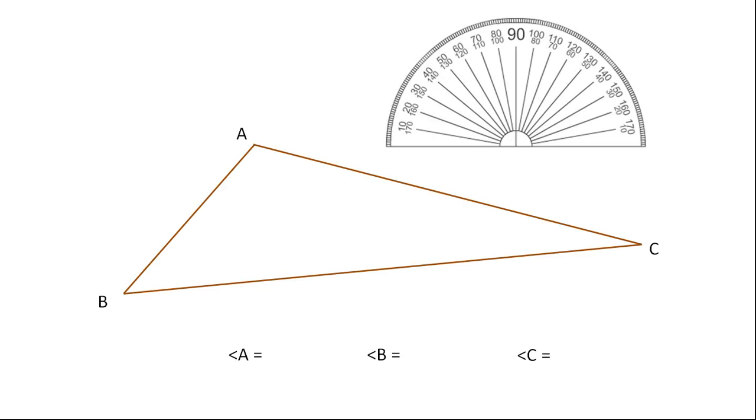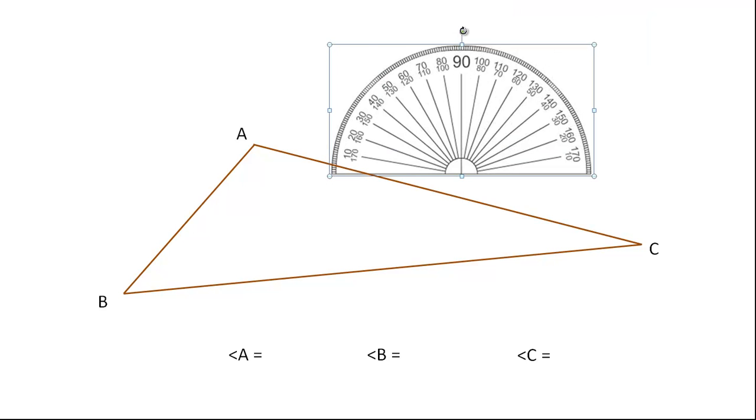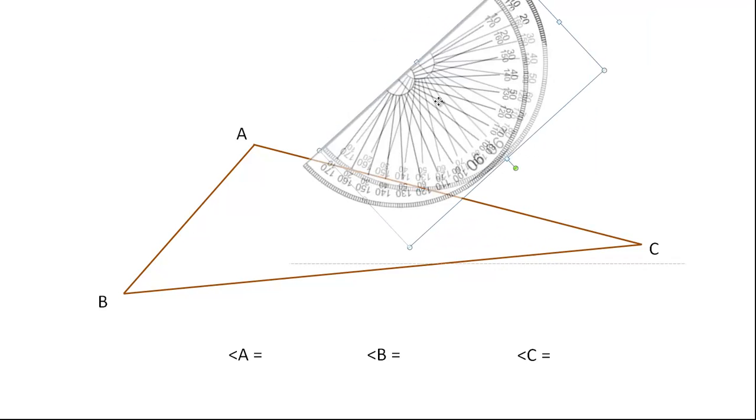So let's go to the second page here now. So I've got these three angles. So A, now I need to rotate my protractor quite a bit here for A.